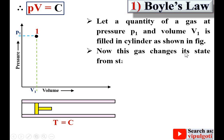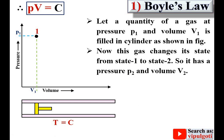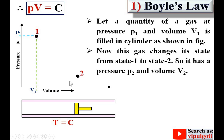Now this gas changes its state from state 1 to state 2. The volume changes and the pressure also changes, but the temperature remains constant according to Boyle's law. The piston was initially at the state 1 position; now at state 2, the pressure is P2 and the volume is V2. This is the process from state 1 to state 2.